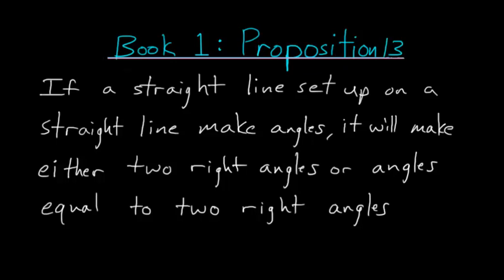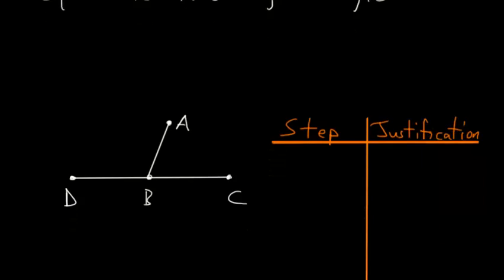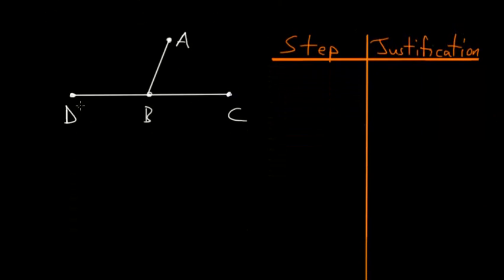For Book 1, Proposition 13 of Euclid's Elements: if a straight line set up on a straight line makes angles, it will make either two right angles or angles equal to two right angles. What this is saying is that if we have some line DC and a line AB coming off of it, the angles formed between these two lines will either be both right angles or will add up to two right angles.